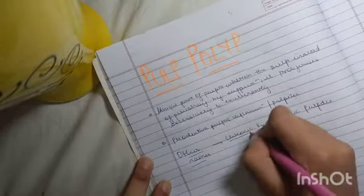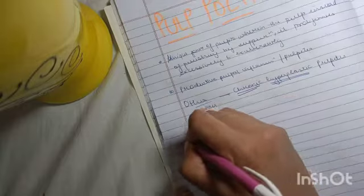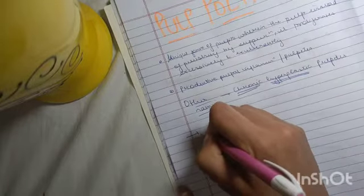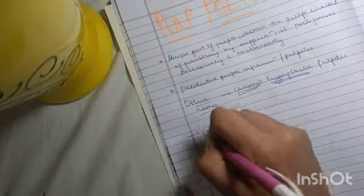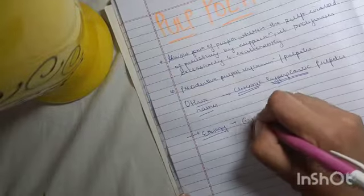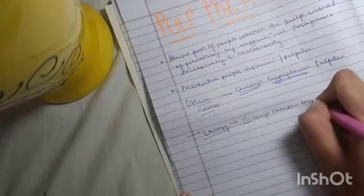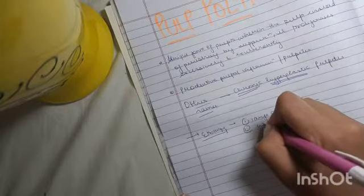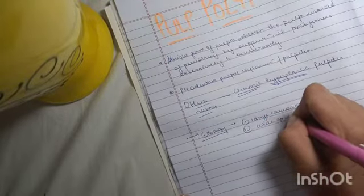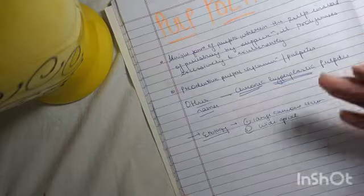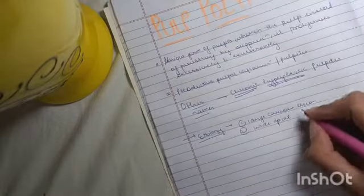This intense proliferation of the pulpal connective tissue is because of few characters which are present. First of all, there needs to be a large carious lesion. Then secondly, we need a wide apical foramen. This is basically the factors that support chronic hyperplastic pulpitis.